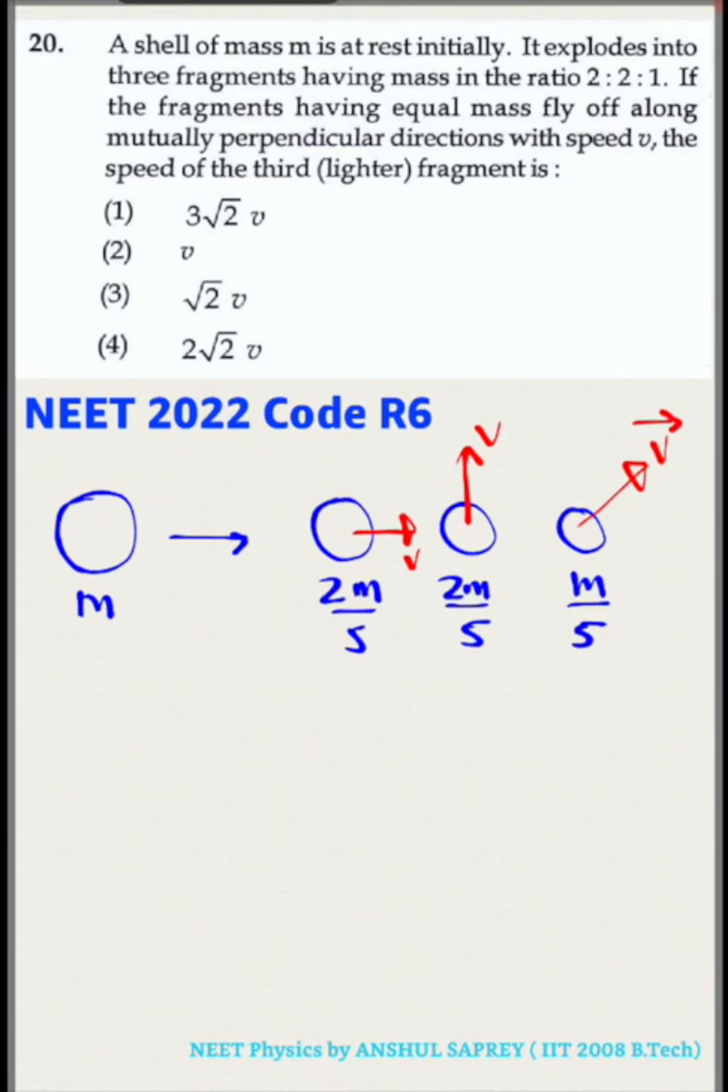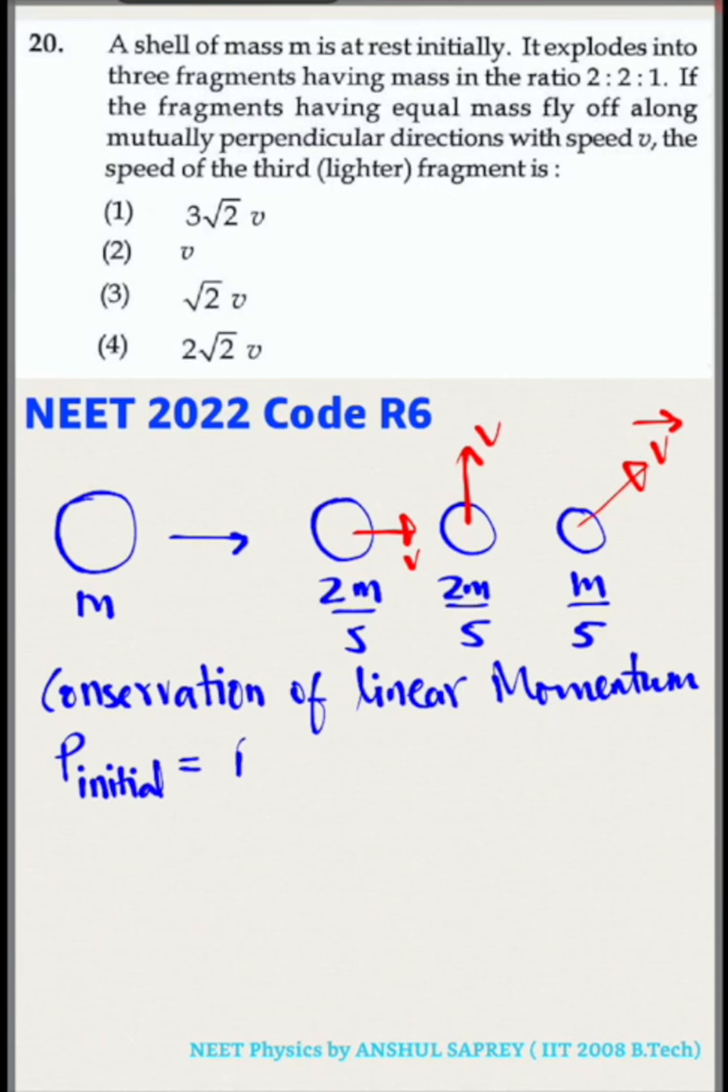Now let's apply conservation of linear momentum in two dimensions because the shell explodes with the help of internal forces. So there is no external force. Initial linear momentum is equal to final linear momentum in vector form.